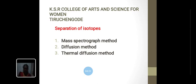Diffusion method: the rate of diffusion of a gas through a porous partition is inversely proportional to the square root of the masses of the molecules.